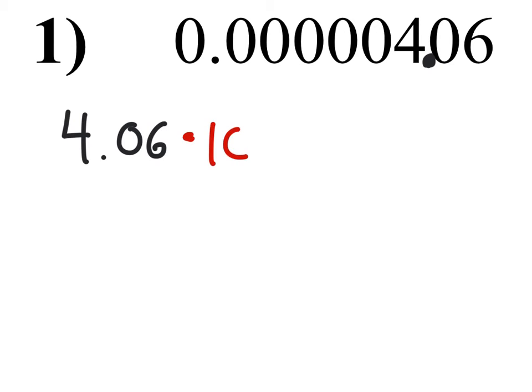So we can write this number now: 4.06, and we will multiply this by 10 to some power. Since that value is less than 1, it's going to be a negative exponent.